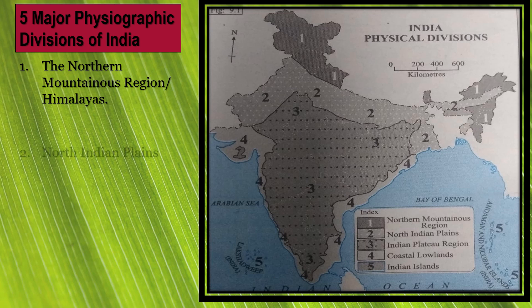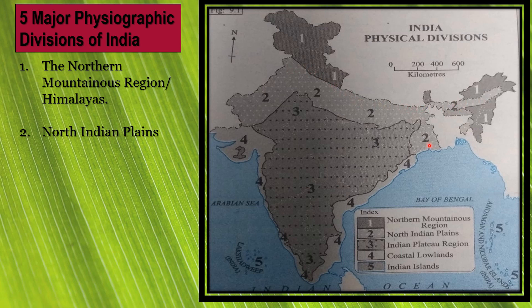The northern Indian plains are the largest and most fertile plains in the world. A plain is a large area of flat land. These plains lie to the south of the Himalayas, stretching from Rajasthan and Punjab in the west to Assam in the east.